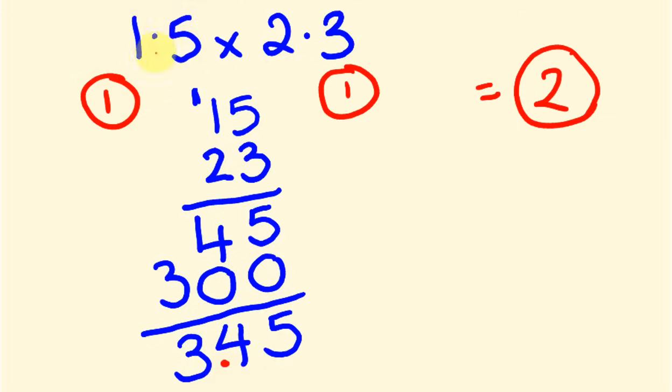You're just going to work out the number of decimal places here, the number of decimal places here, add them together, and there we go. That's how many we have in our answer. So I'll give you another example here.